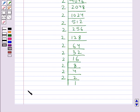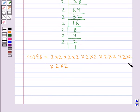Now prime factorization of 4096 is given by 2 multiplied to itself 12 times. Now we will pair up these prime factors. This is 1 pair, this is the other pair, 3rd pair, the 4th pair, 5th pair and the 6th pair.